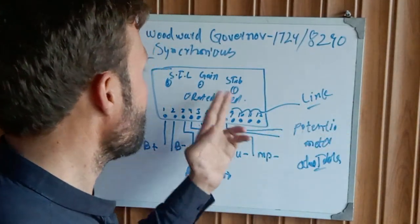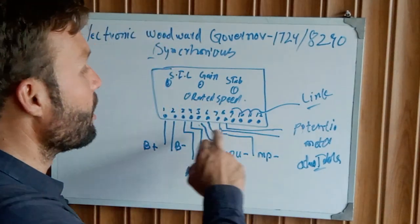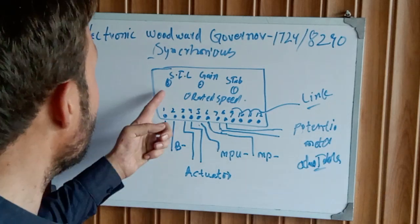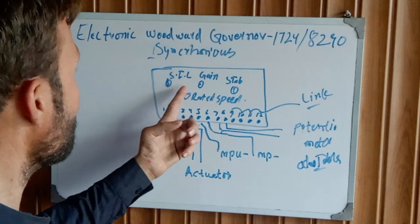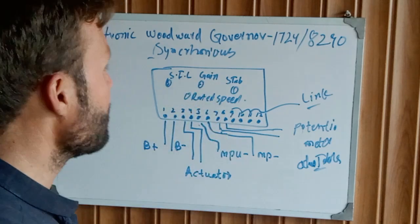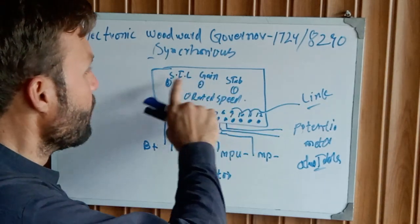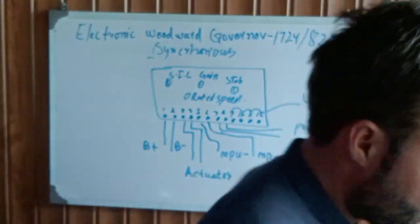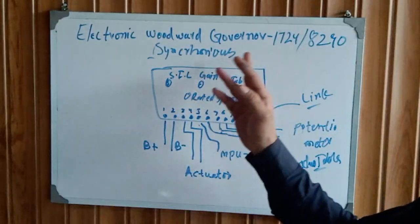This will sense the generator's operating load rating and automatically shut down the other generator. There are some settings - start fail limits, gain, stability, and rated speed. You can set these with a small potentiometer with a screw for your specific settings. This is the complete wiring diagram of the Woodward Governor 8290 model.